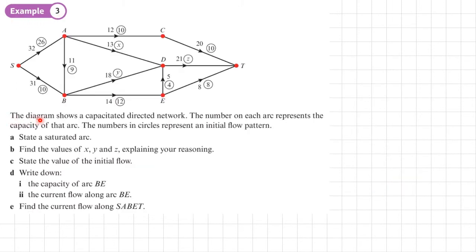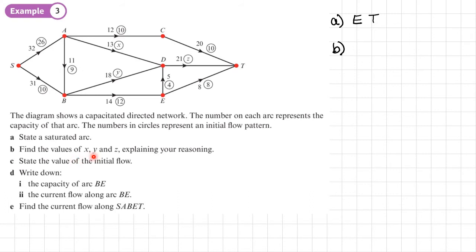Example 3. The diagram shows a capacitated directed network. The number on each arc represents the capacity of that arc, and the numbers in the circles represent an initial flow pattern. Part A: state a saturated arc — one where the capacity equals the flow. The only one I can see is arc ET, where the capacity is 8 and the flow is 8, so it's completely saturated. For part B, we need to find the values of X, Y, and Z.